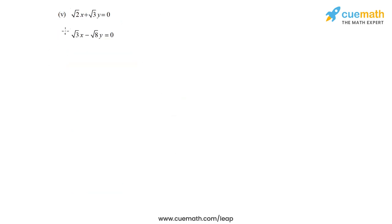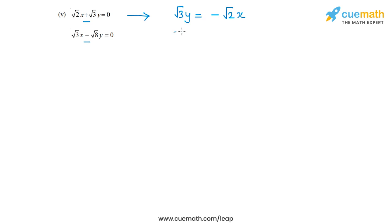In the fifth part, the pair of equations is root 2 times x plus root 3 times y equal to 0 and root 3 times x minus root 8 times y equal to 0. Let's take the first equation and use it to write y in terms of x. We have root 2x plus root 3y equal to 0, which means root 3y equal to minus root 2x, so y equal to minus (root 2 by root 3) times x.